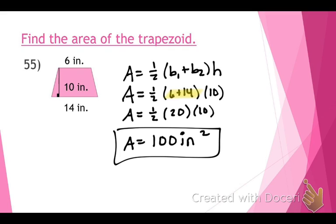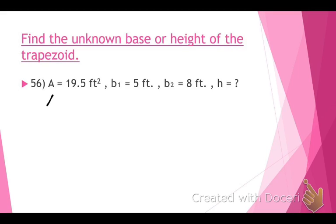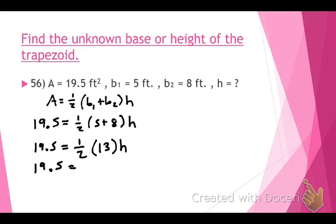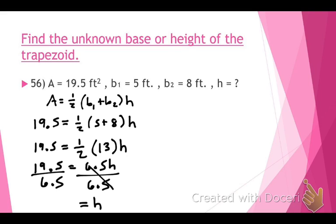Remember for your final: you need to know all these formulas. For this problem, the area is known, base one is 5, base two is 8, and we're looking for the height. Do the parentheses first: 5 plus 8 equals 13, so we have A equals one-half times 13 times h. One-half of 13 is 6.5, so the equation becomes 6.5 times h. Divide to get h by itself, and the height equals 3 feet.